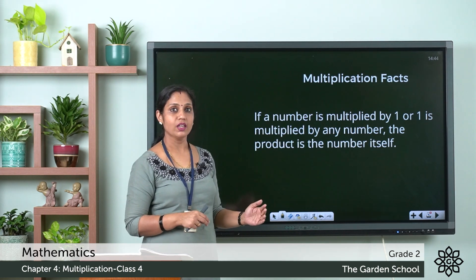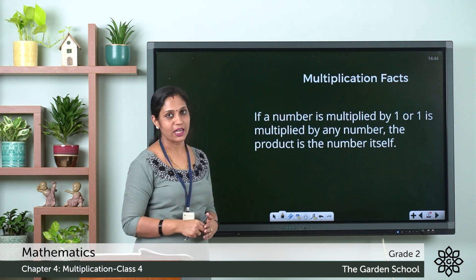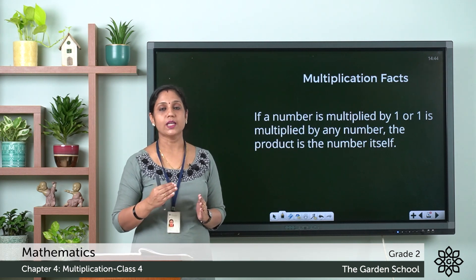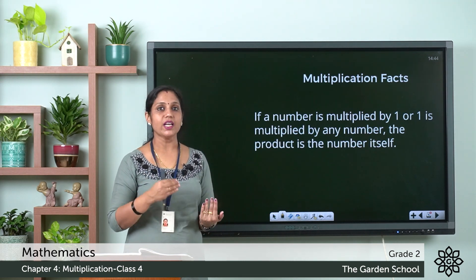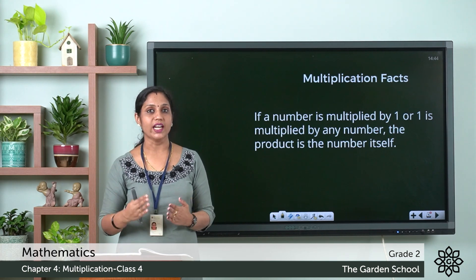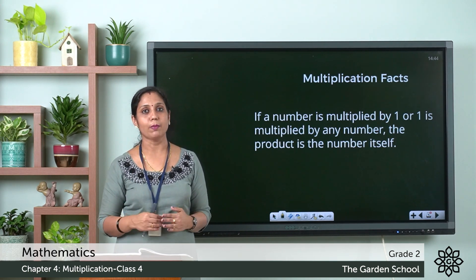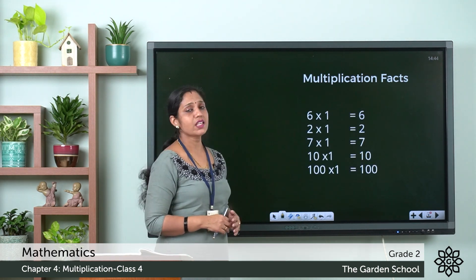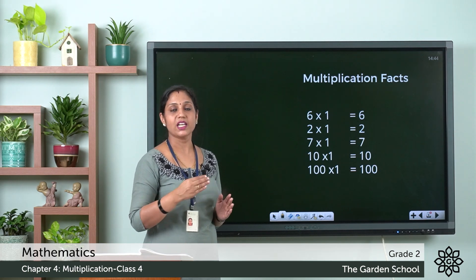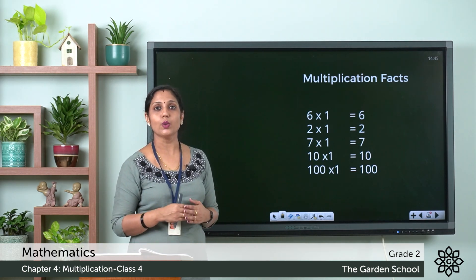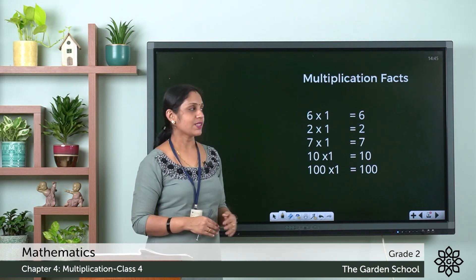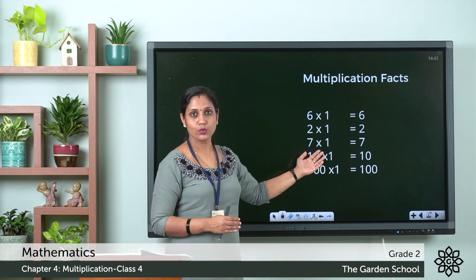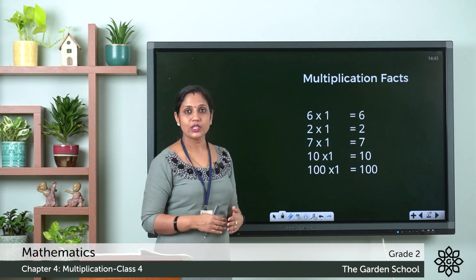We can write this in multiplication form as 6 × 1 = 6. So if a number is multiplied by 1, or 1 is multiplied by any number, the product is the number itself. For example: 2 × 1 = 2, 7 × 1 = 7, 10 × 1 = 10, and 100 × 1 = 100.